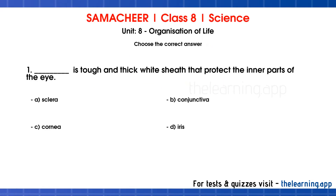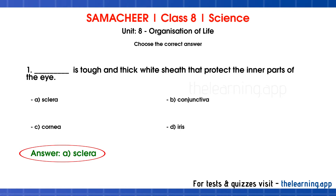First question: dash is a tough and thick white sheath that protects the inner parts of the eye. The options are A. Sclera, B. Conjunctiva, C. Cornea, D. Iris. The correct answer is option A, Sclera. If you look at the face of the eye, it is white — that thick white sheath is called Sclera.